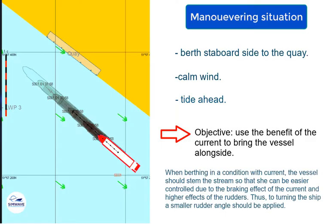In common practice, when berthing in a condition with current, the vessel should stem the stream so that she can be easier controlled due to the braking effect of the current and higher effects of the rudders. In this situation, the speed of water flow moving through the rudders is higher, which increases the traversal thrust of the rudders.